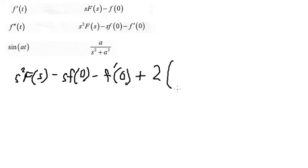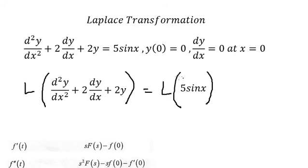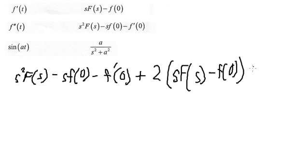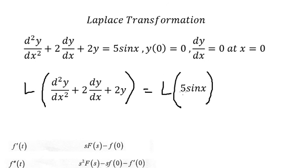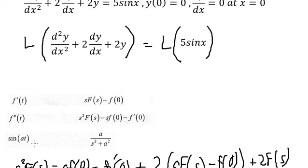We get s times F(s) minus f(0), and we have plus two times F(s). For the sine term, we convert it into a over s-squared plus a-squared.